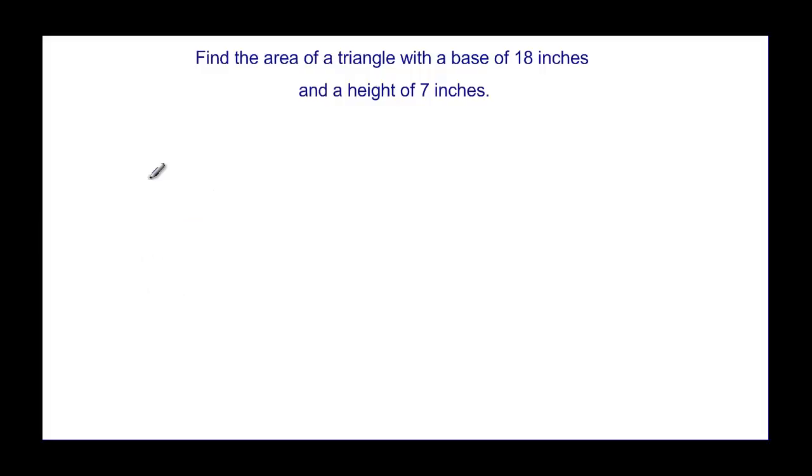So let's look at how we can translate and then use a formula. The area of a triangle with a base of eighteen inches and a height of seven inches. We're trying to find that area. But we need to know what the formula is. And the formula for area of a triangle is one half the base times the height.